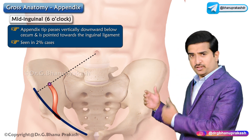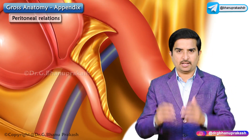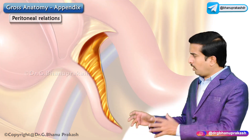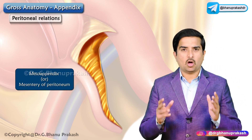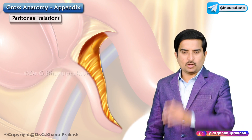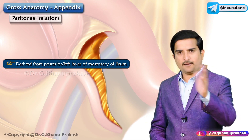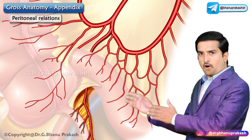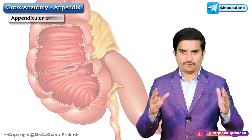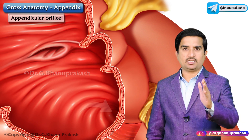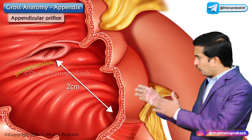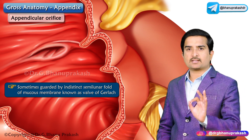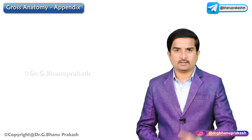Now let us talk about the peritoneal relations of the appendix. The vermiform appendix is an intraperitoneal structure suspended by a small triangular fold of peritoneum known as the meso-appendix, or mesentery of the appendix. The meso-appendix is derived from the posterior or left layer of the mesentery of the ileum, and the appendicular artery runs through its free margin. The appendicular orifice is placed two centimeters below the ileocecal orifice on the posteromedial aspect of the cecum, sometimes guarded by an indistinct semilunar fold of mucous membrane known as the valve of Gerlach.